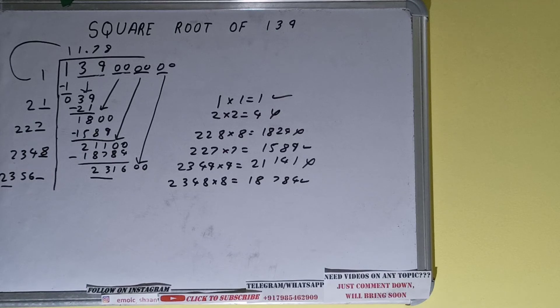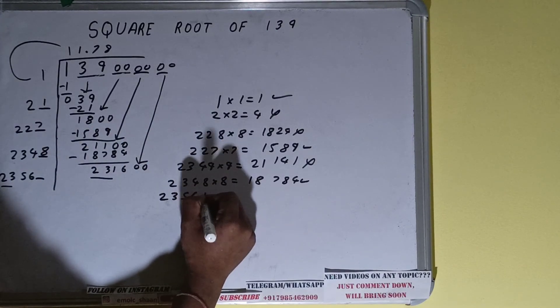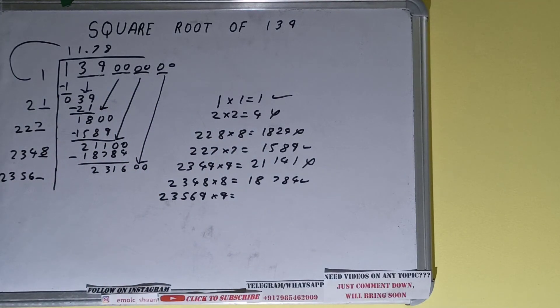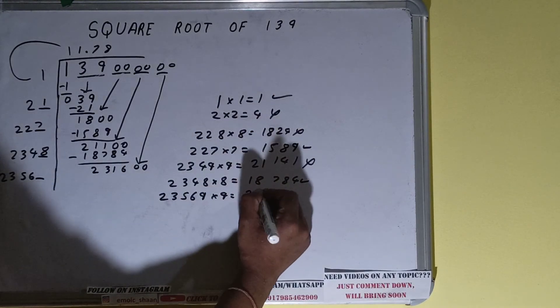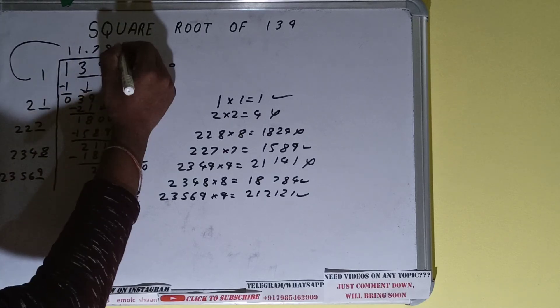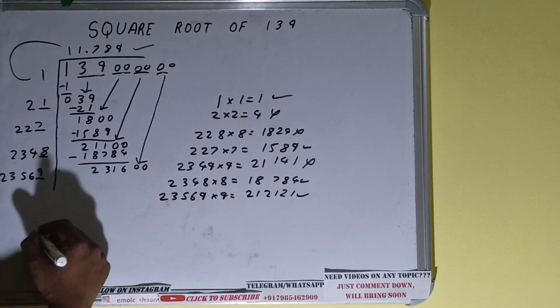2356 nine into 9 we can try, it will give number as 212121, that is all right to take. So 9 here and 9 here, but we don't need to solve because we already got our answer correct up to three decimal places. So square root of 139 will be 11.789 and that will be our answer.